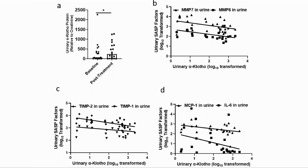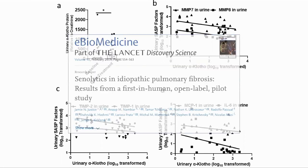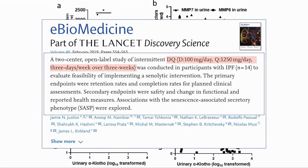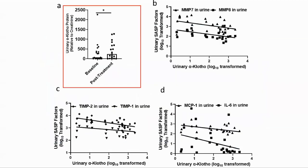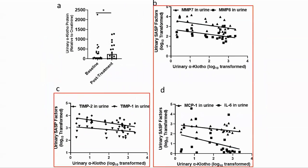Does this also work in humans? These results came from a study reported in 2019, whose primary purpose was to study senolytics in idiopathic pulmonary fibrosis, but data was also gathered to observe changes in klotho, which was examined for this paper. The dose was 100 milligrams of dasatinib and 1,250 milligrams of quercetin over three consecutive days, once a week for three weeks. They saw that klotho expression in the urine did increase, and klotho levels were inversely related to a number of SASP factors, showing that in humans reducing SASP by eliminating senescent cells increased alpha-klotho.